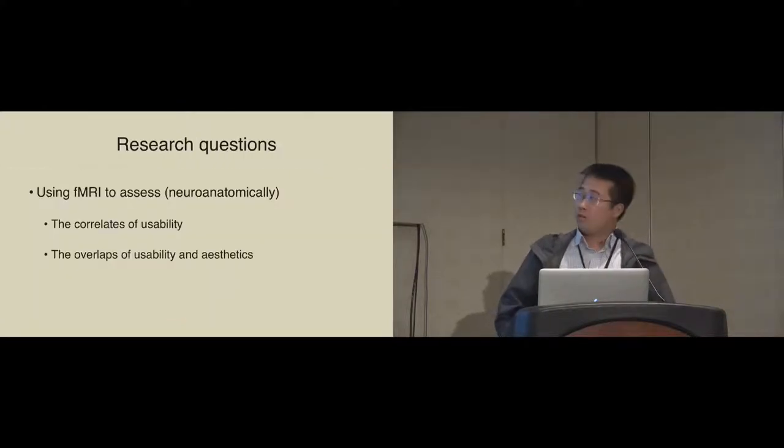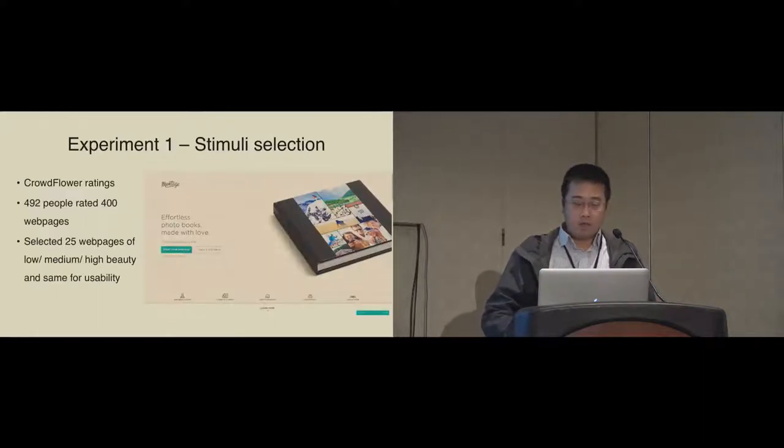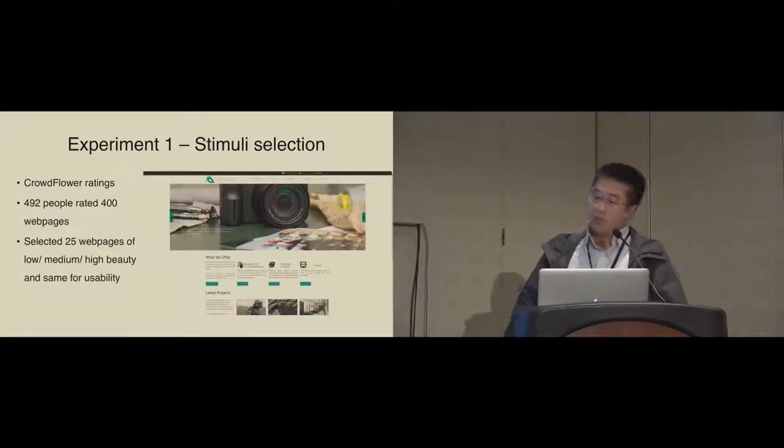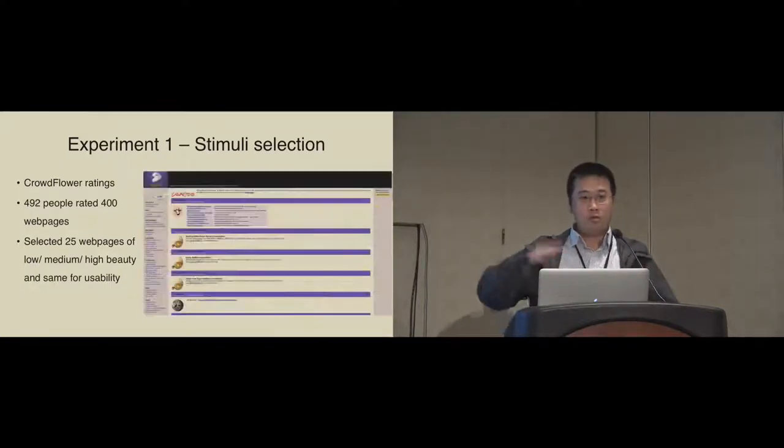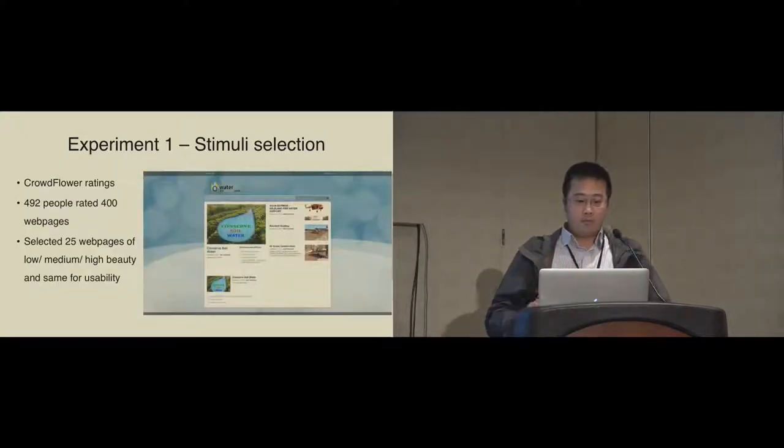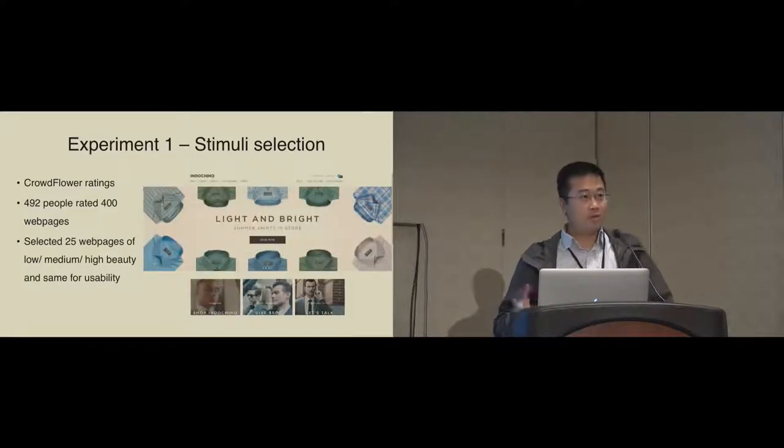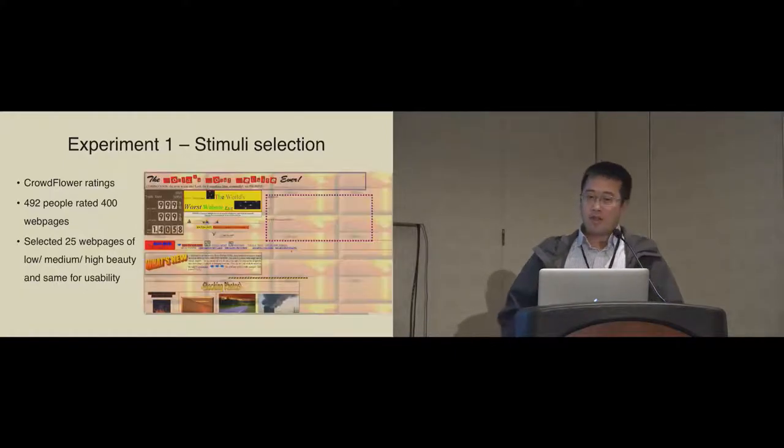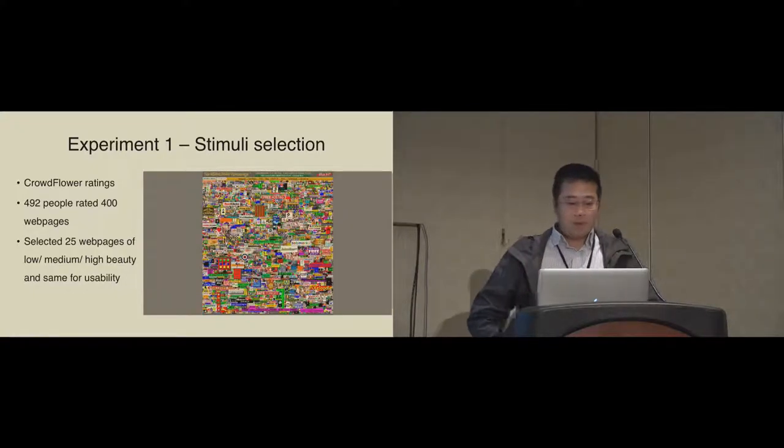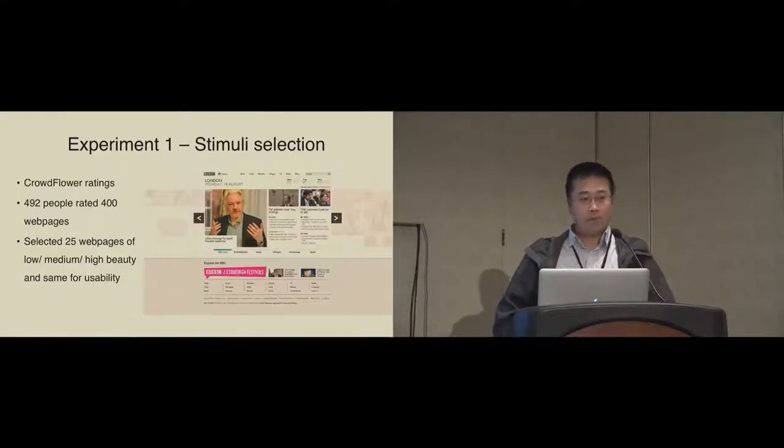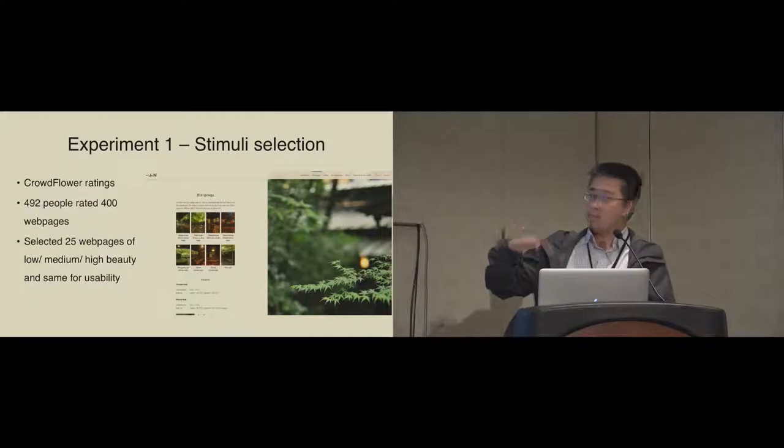In our study, we use fMRI technique with the aim to answer the research question of what is the neuroanatomical correlate of usability, and whether the overlap between usability and aesthetic exists, and by how much. In our first experiment, we collected 400 static webpages, ranging from low to high beauty, and also low to high usability. We used these 400 webpages given to people on Crowdflower website to rate, and 492 people rated these websites, each rating about 5 to 15 webpages. Based on the results, we selected 25 webpages of each level of beauty, which is low, medium, and high, and we did the same for usability. So for each category, we have three levels.